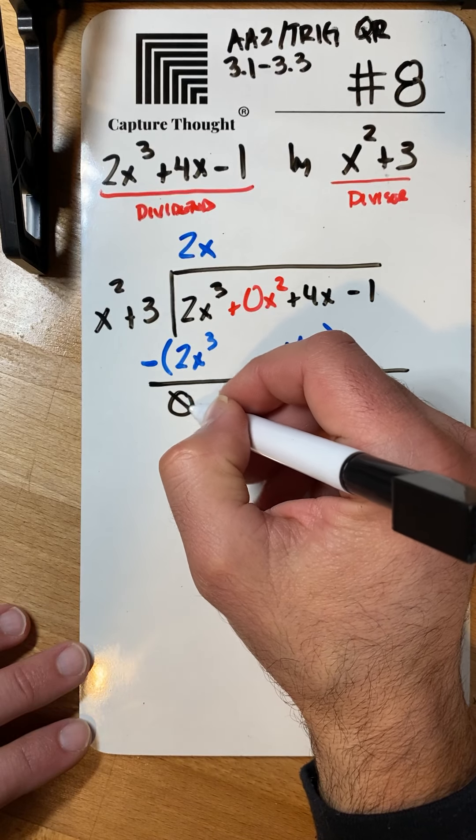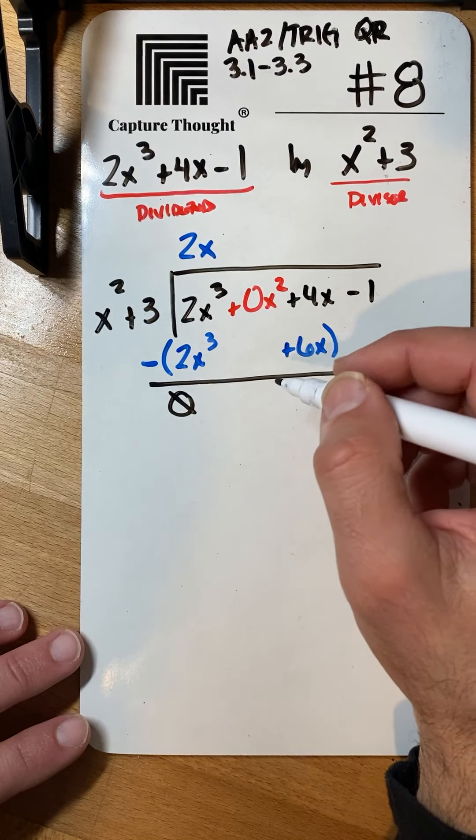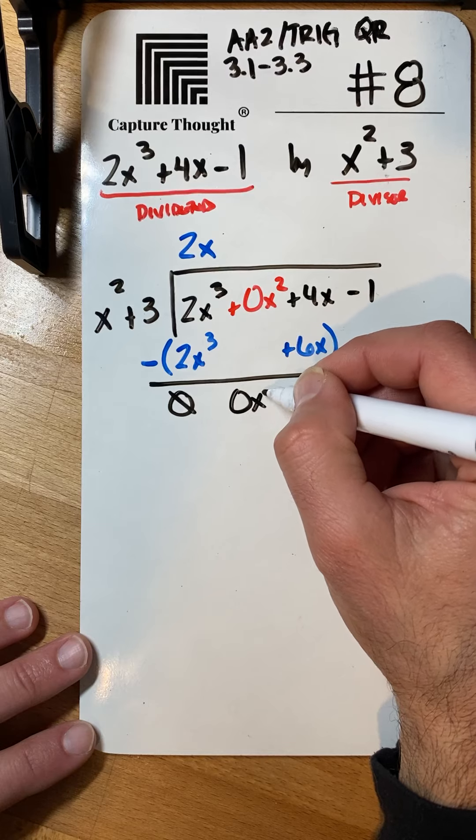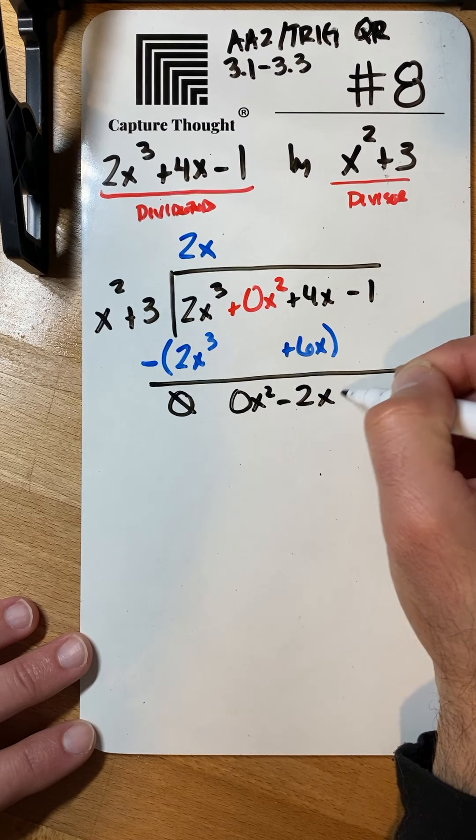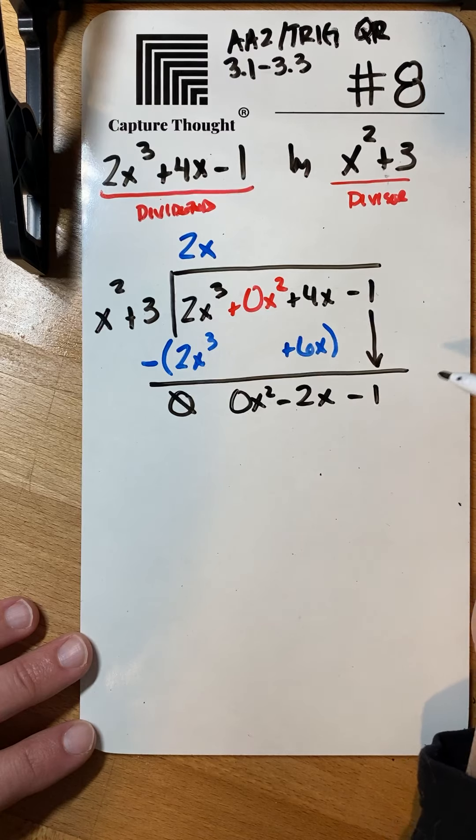And then we are going to subtract everything from here and see where we end up. So this is zero by design. Zero x squared minus nothing is just a zero x squared. Four x minus six x is negative two x. And then bring down your minus one.